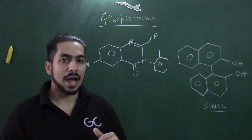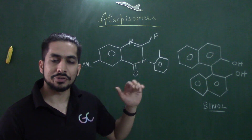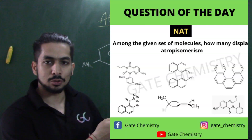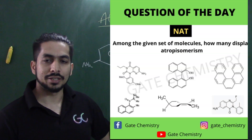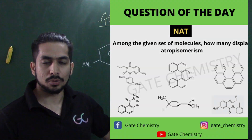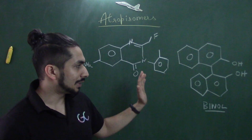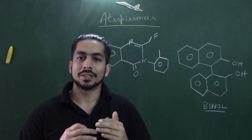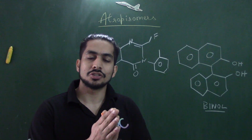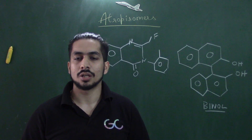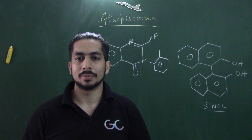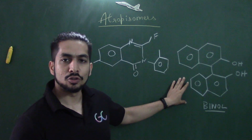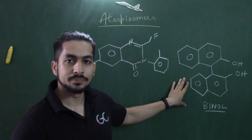I had posted a question related to this topic on the community tab, and we'll discuss the answer later. But first, let's discuss the concept of atropisomerism. It is basically a kind of chirality that is generated because of hindered rotation around a carbon-carbon single bond.